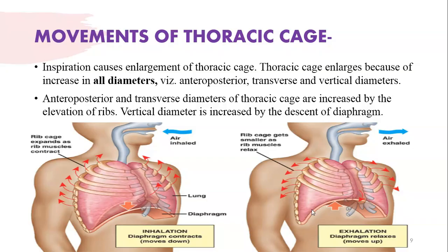Now, with the help of these inspiratory and expiratory muscles, how does the chest wall or thoracic cage move? The topic is movements of the thoracic cage. Inspiration causes enlargement of the thorax in three dimensions: anteroposterior, transverse (lateral), and vertical.